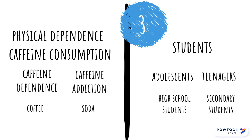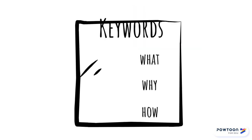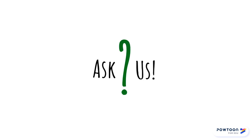Now we have a robust list of keywords that should give us a good variety of sources as we research. Hopefully you now understand what a keyword is, why it's important, and how to identify and develop your own. If you have more questions about keywords, ask a librarian for help.